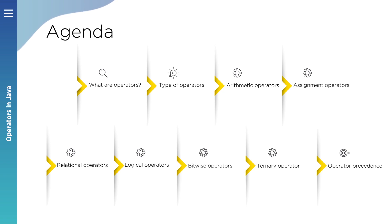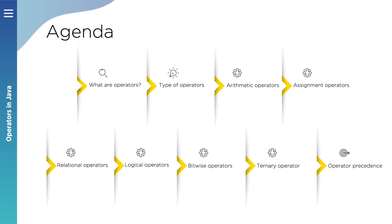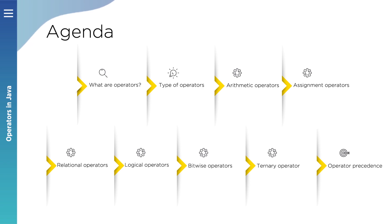The second criteria is the type of operation they perform. An operator is called an arithmetic operator, a relational operator, a logical operator, or a bitwise operator, depending on the kind of operation it performs on its operands.